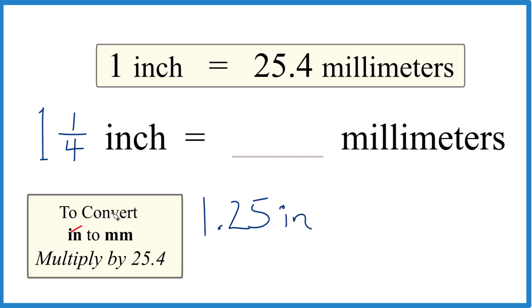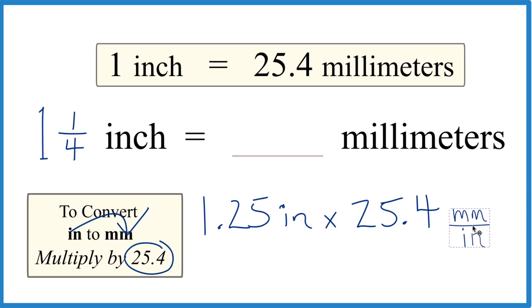And then when we go from inches to millimeters, we multiply by 25.4, which makes sense because there are 25.4 millimeters in 1 inch. Those are the units, millimeters per inch, like that right there.